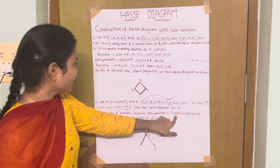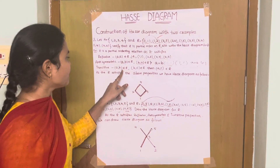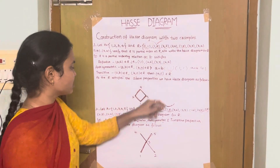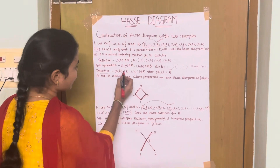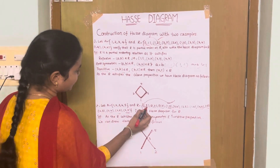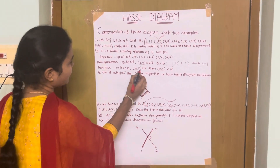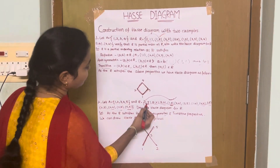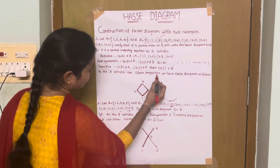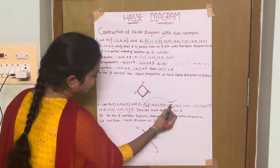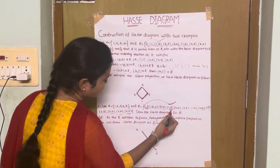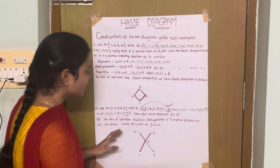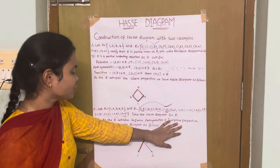Then take transitive: if (A, B) belongs to R and (B, C) belongs to R, then (A, C) belongs to R. Consider (A, B) as (1,1) and (B, C) as (1,3). Then (A, C) is (1,3). Here in this relation (1,3) is also present. So it satisfies the transitive property.